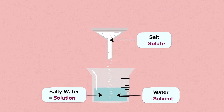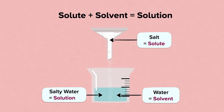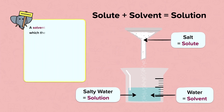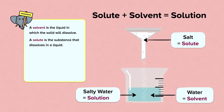Dissolving is the complete mixing of a solute with a solvent to form a solution. The solution mixture formed in this case is the salty water. A solvent is the liquid in which the solid will dissolve. A solute is the substance that dissolves in a liquid. Dissolving is the complete mixing of a solute with a solvent to form a solution.